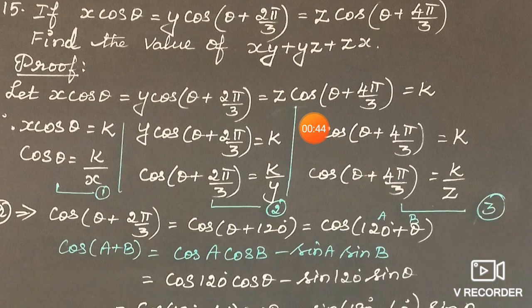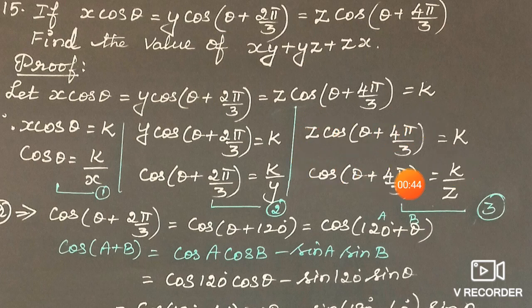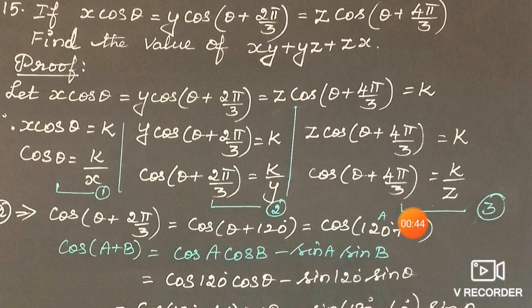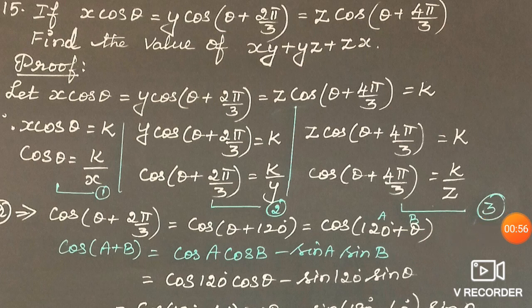Also, z·cos(θ + 4π/3) = k, bringing z to the denominator gives cos(θ + 4π/3) = k/z. Name it as equation 3.